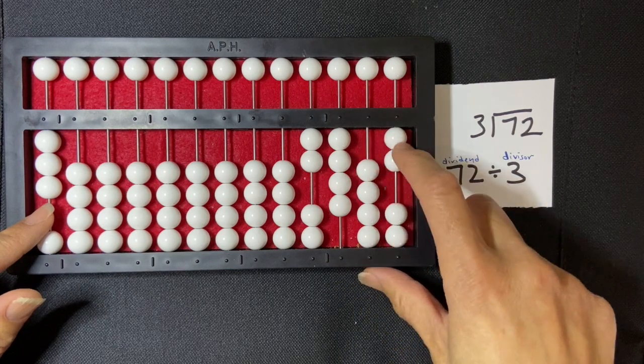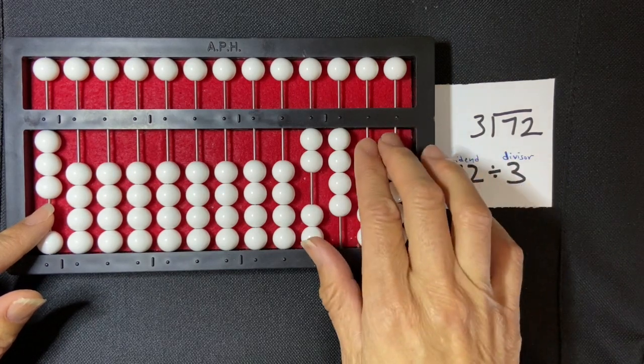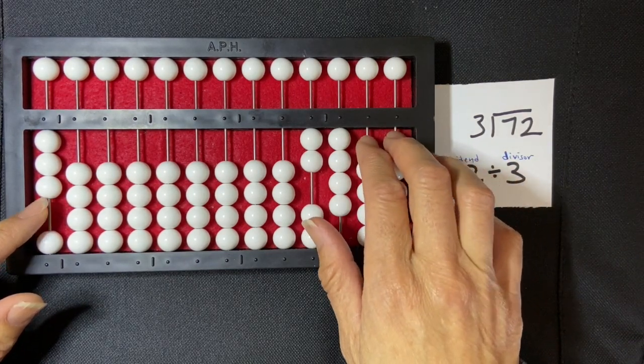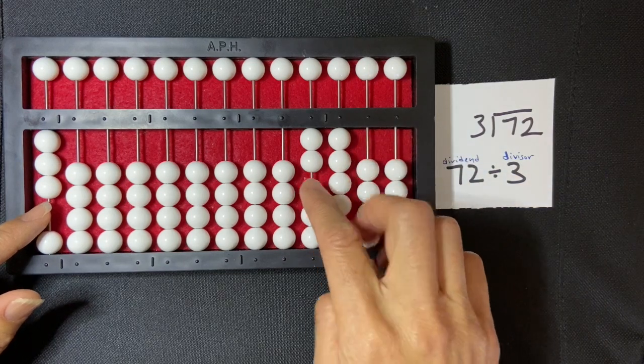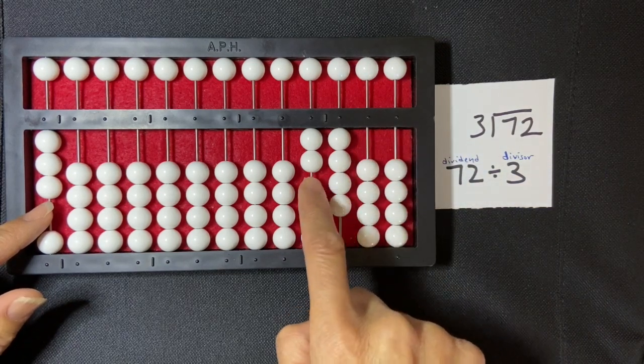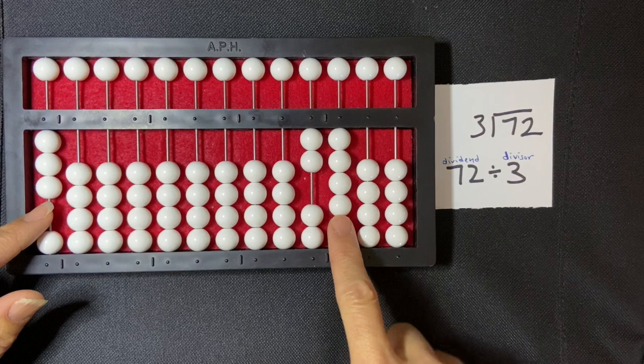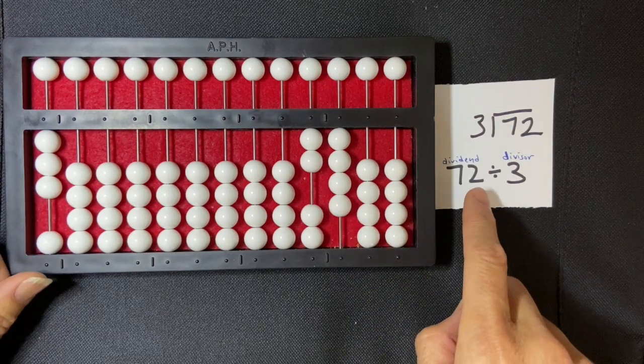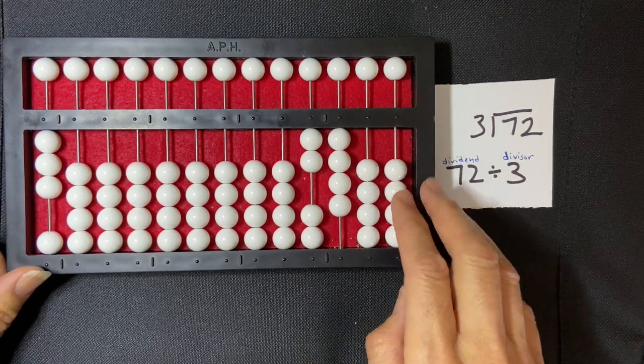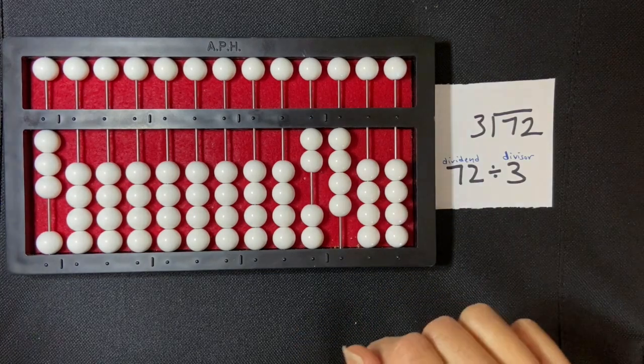So I'm going to subtract the 10 and then the 2. And then that leaves me with two empty rods to the right of my quotient, and my quotient, my answer, is 24. And that was a division problem with no remainder on the abacus using the counting method.